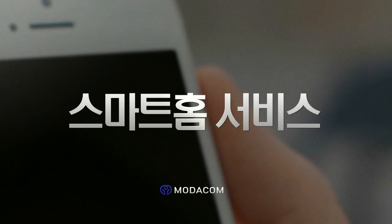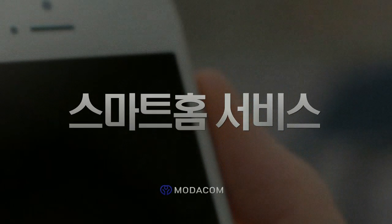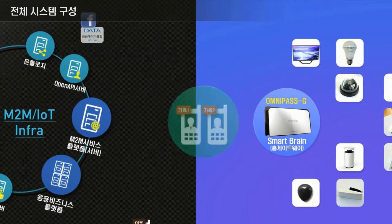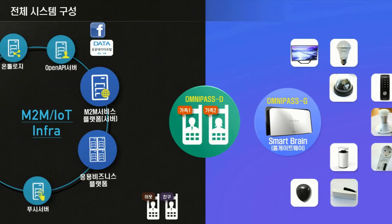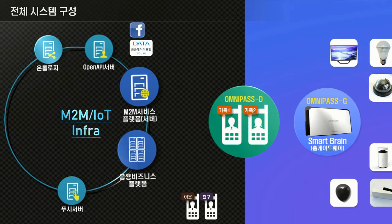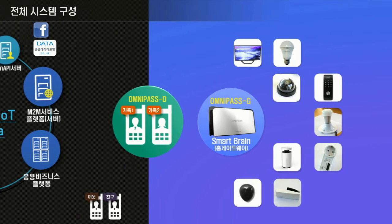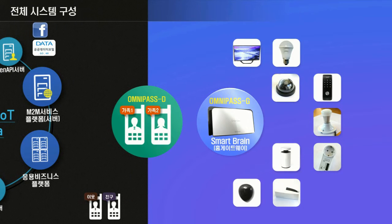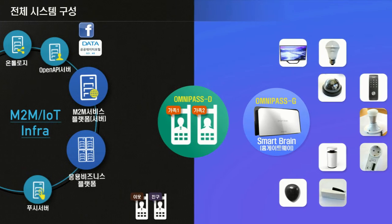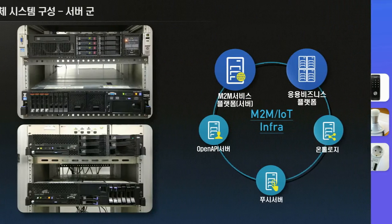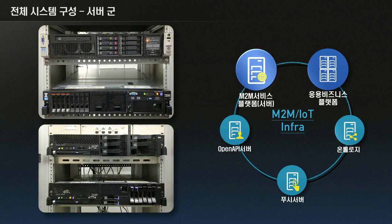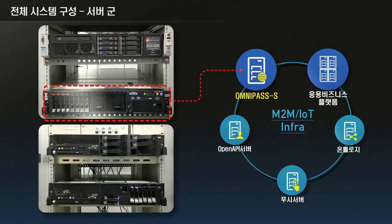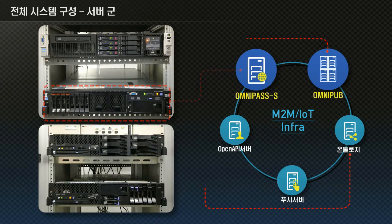Modicom's Smart Home Service solution consists of an infrastructure domain that includes platform and server, and a home domain that connects home appliances centered on a home gateway. In the infrastructure domain, there is an international standard M2M service platform and applicable business platform OmniPub that supports intelligent convergent service.